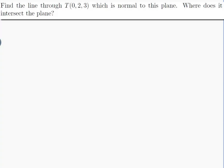The question is, find the line through T(0,2,3) which is normal to this plane. Where does it intersect the plane?